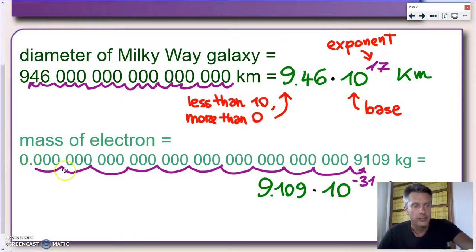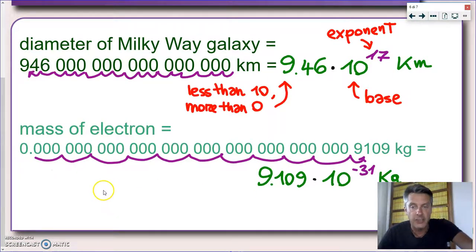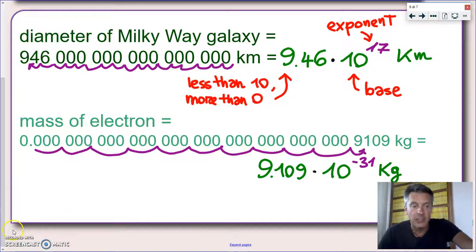3, 6, 9, 12, 15, 18, 21, 24, 27, 30, and one more step to get here, 31. So the mass of the electron written in scientific notation is 9.109 times 10 to the minus 31 kilograms.